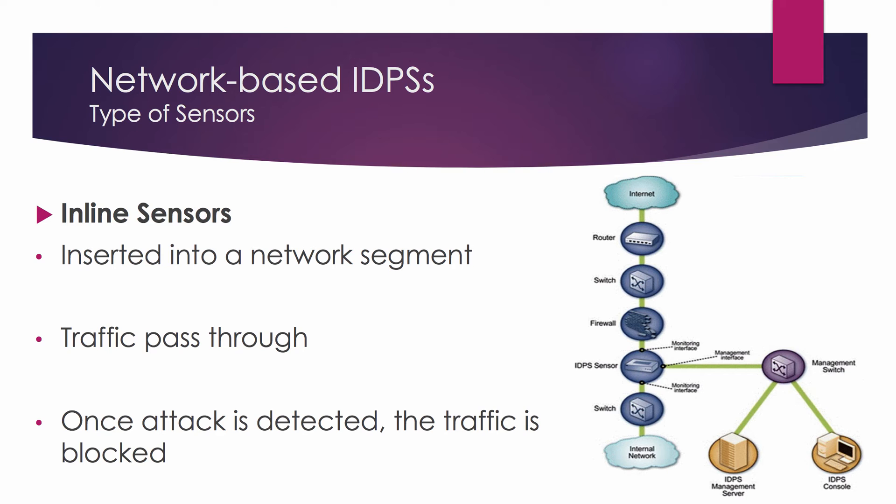The downside of inline sensors is the potential to create a traffic bottleneck if the sensor becomes overloaded. To avoid this problem, the sensor can be positioned on the more secure side of the network — for example, behind the firewall — so that it has less traffic to process.